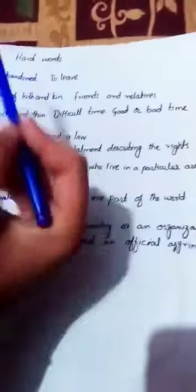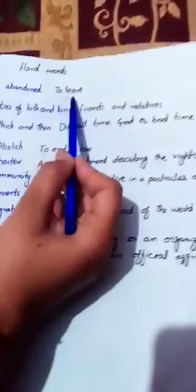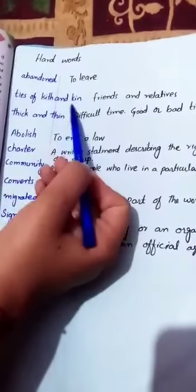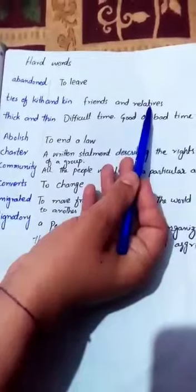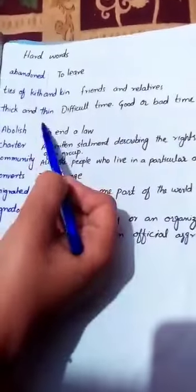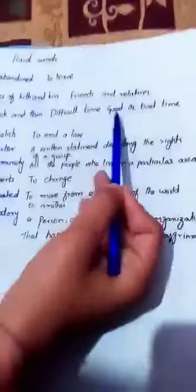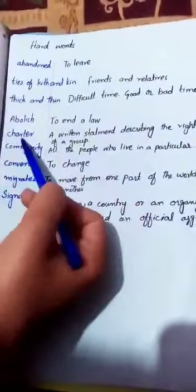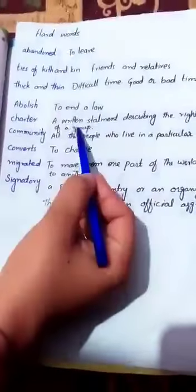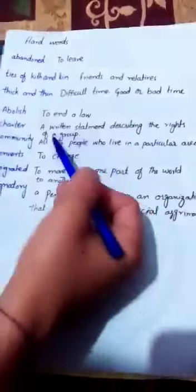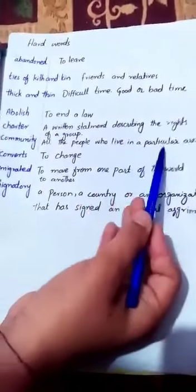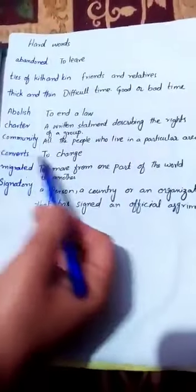Now coming towards the hard words. Abandoned — to leave; the meaning in Urdu is chhor dena. Kith and kin — friends and relatives; khuni rishte ya dost. Thick and thin — good and bad times, difficult times. Abolish — khatam kar dena, to end. Charter — misaaq, dustur; a written statement describing the rights of a group. Community — tabqa; the people who live in a particular area. Converts — to change religion.